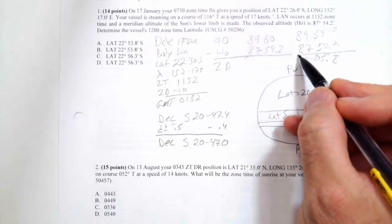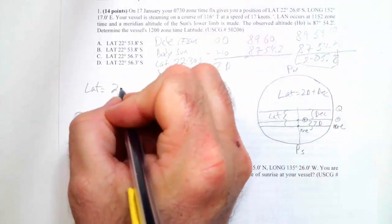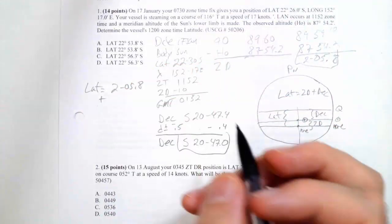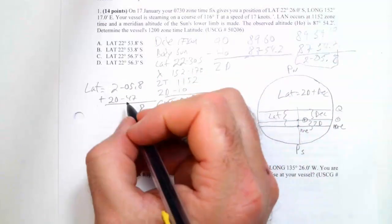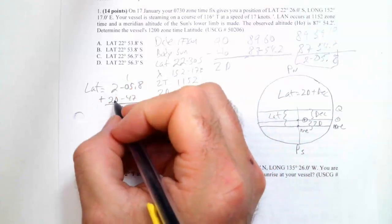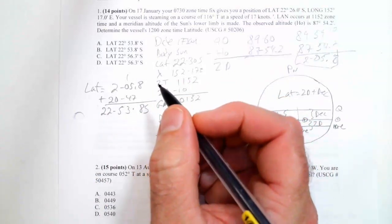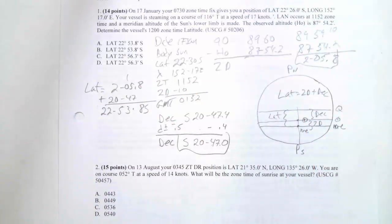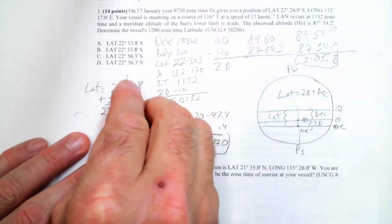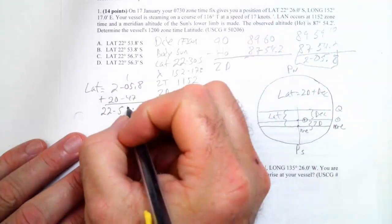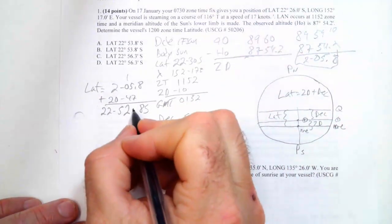So here's my ZD. Here's my deck. I got to add those two. So lat is going to be ZD 205.8 plus 2047. So that's going to become 0.8. And seven and five is 12, not 13. I'm shooting this kind of late at night. I'm a little bit fatigued here. So it should be 2052.8 south. So that's the latitude. But that's the latitude at 1152.